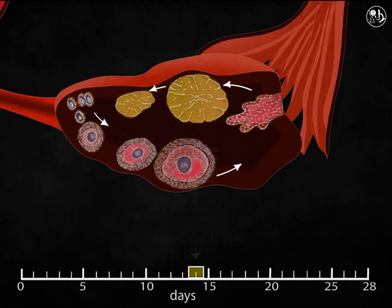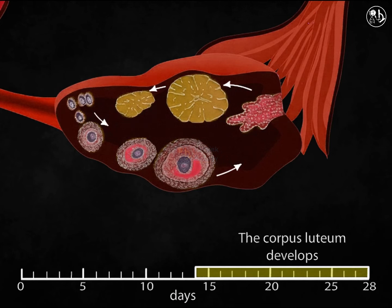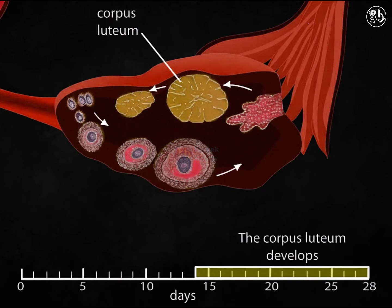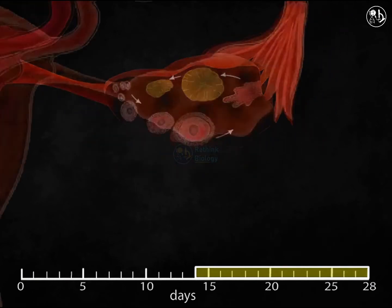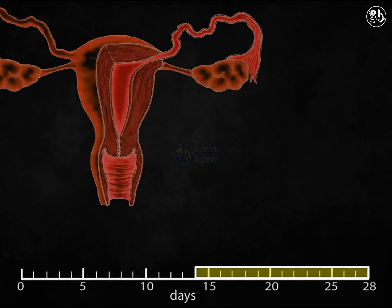The corpus luteum is a tiny mass of endocrine tissue that develops from the follicular cells left behind. For two weeks, the corpus luteum stays in the ovary secreting estrogen and progesterone. This corpus luteum disintegrates at the end of the ovarian cycle if the woman is not pregnant.